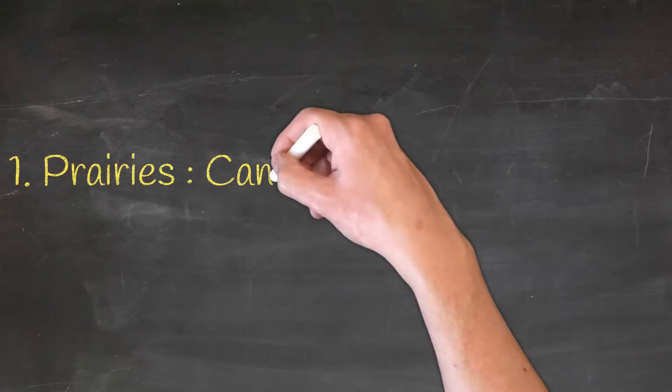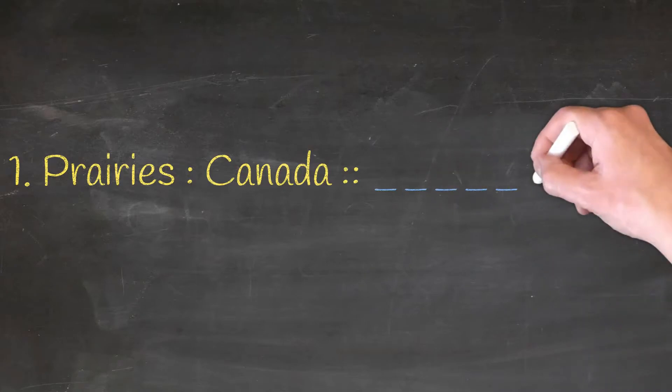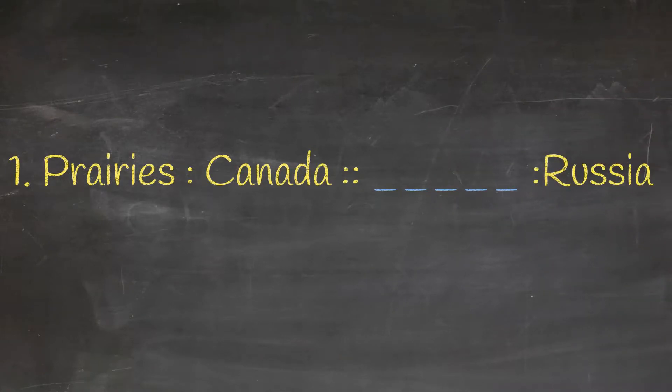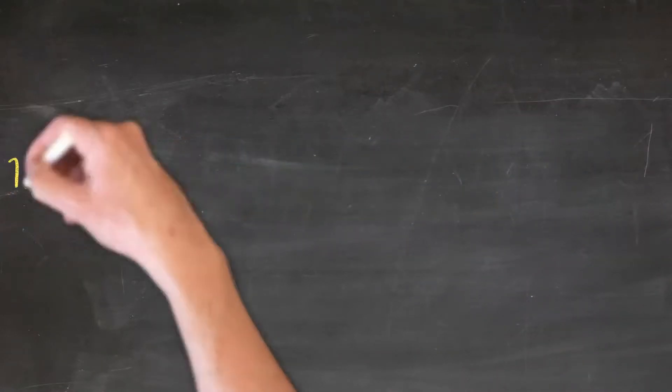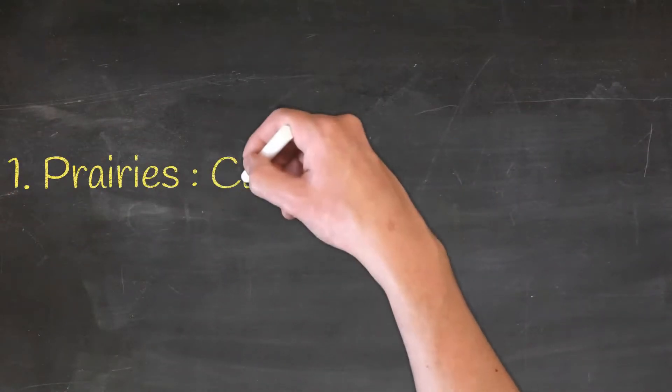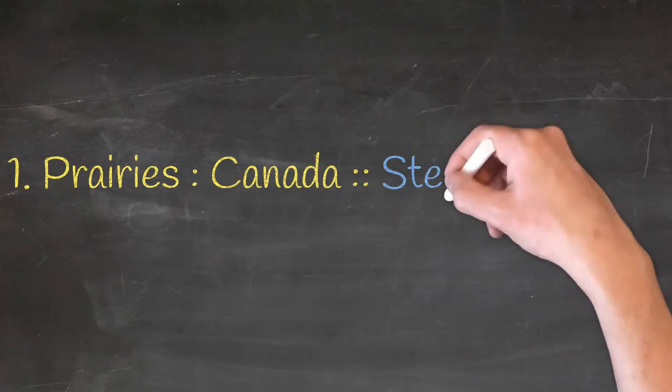Prairies, Canada-Russia. And the correct pair is steps. Prairies, Canada. Steps, Russia.